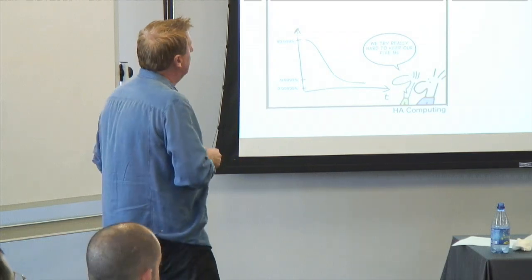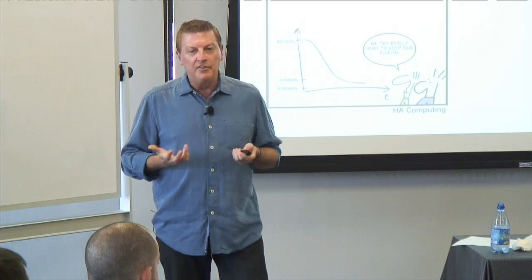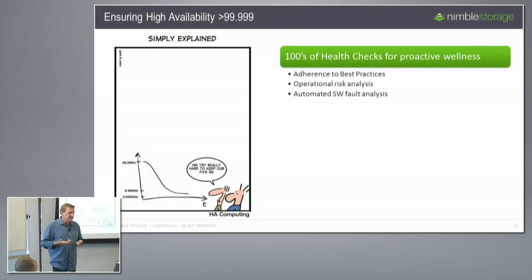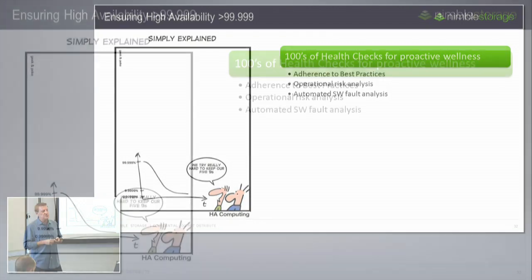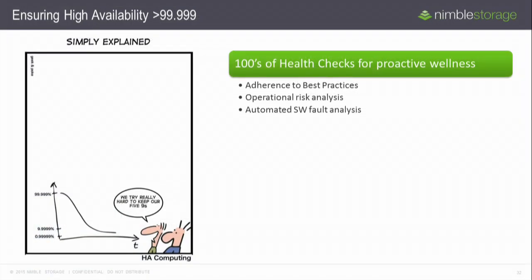This section is about ensuring five nines. Obviously the product has a lot built in to ensure high availability — redundant hardware, all the QA processes to release reliable software. But at some point other things will go wrong that may cause disruptions. We do a bunch of health checks — about four or five hundred of these on every array constantly.